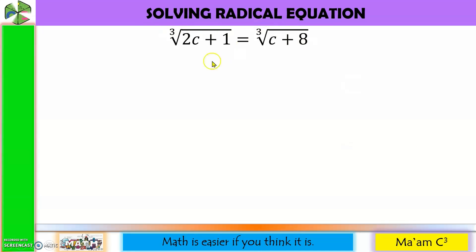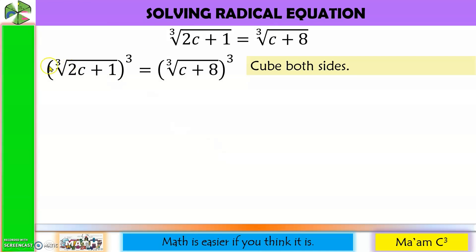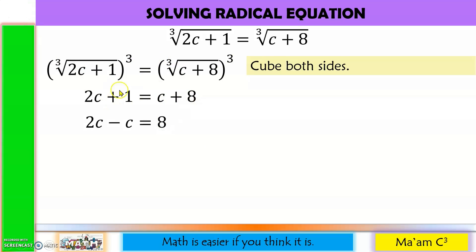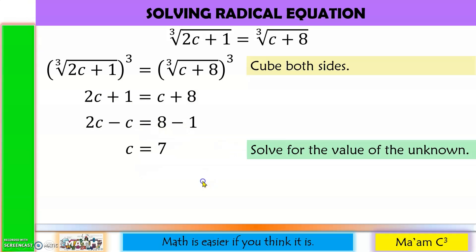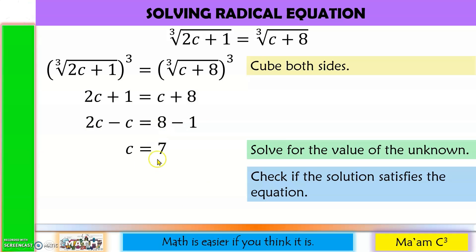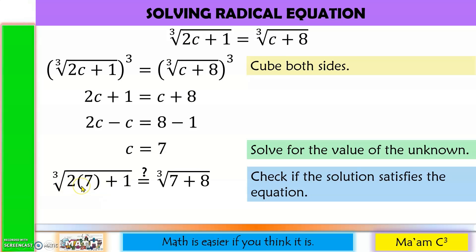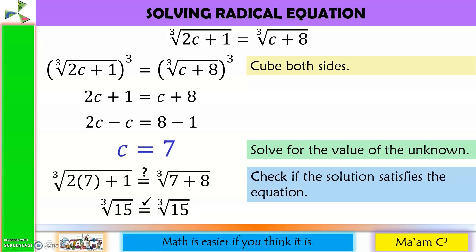Next example: since the indices of the radicals are the same, cube both sides. The cube root and exponent 3 cancel on both sides. Combine like terms — move c and 1 to the other side. 2c minus c is c, and 8 minus 1 is 7. Checking: substitute 7 — 2 times 7 is 14, and 14 plus 1 is 15, so cube root of 15. And 7 plus 8 is also 15, so cube root of 15. They are equal, so c equals 7 is the solution.